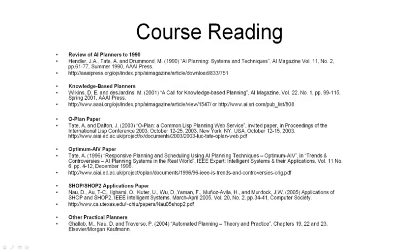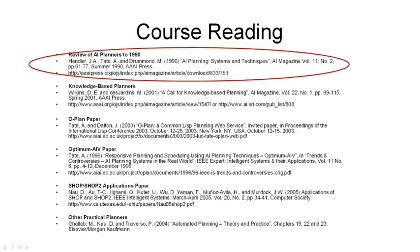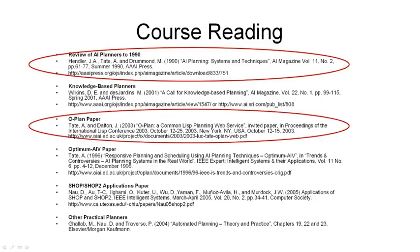There are also a number of readings — some of them very short — on specific planners and their applications, and we hope you might dip into these during the course. If you've got time to read just a couple, these are the ones suggested: the initial review of AI planners to 1990, and a very short paper on O-Plan, one of the Edinburgh planners, which looks at a wide range of techniques and applications that were in use in that system.